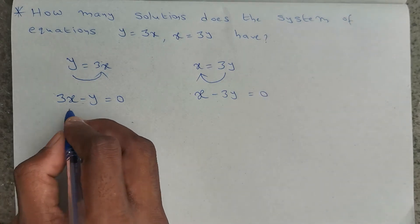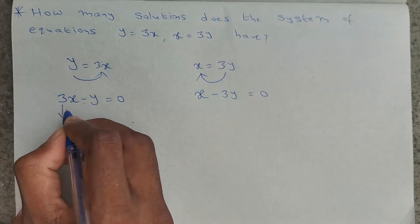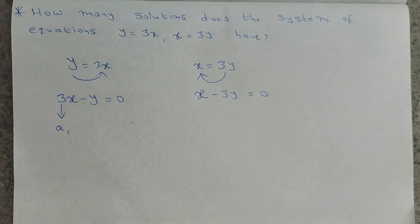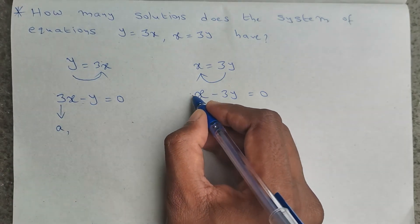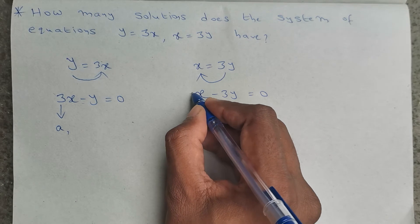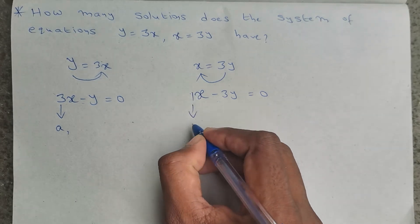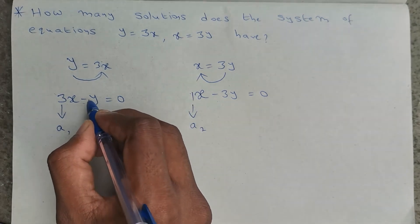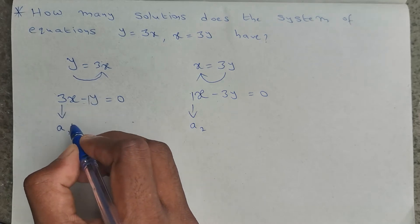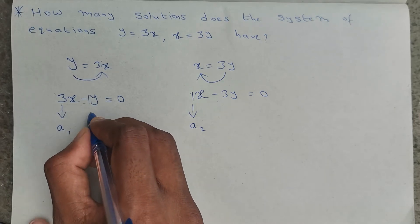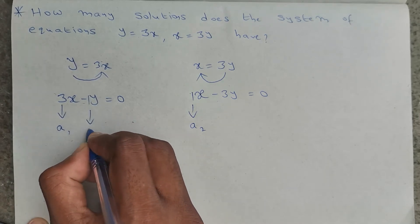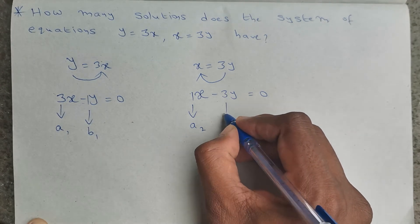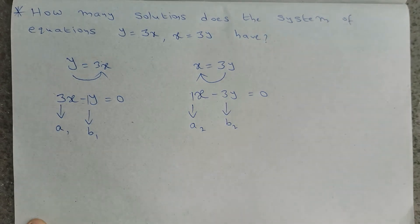Observing the coefficients: the x coefficient in the first equation is 3, so a1 equals 3. The x coefficient in the second equation is 1, so a2 equals 1. The y coefficient in the first equation is minus 1, so b1 equals minus 1. The y coefficient in the second equation is minus 3, so b2 equals minus 3.